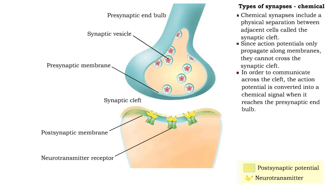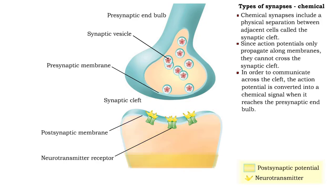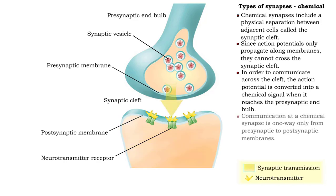Unlike electrical synapses that allow for two-way transmission of signals, communication at a chemical synapse is one way only, from presynaptic to postsynaptic membranes.